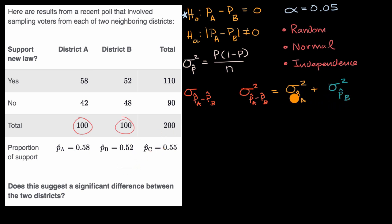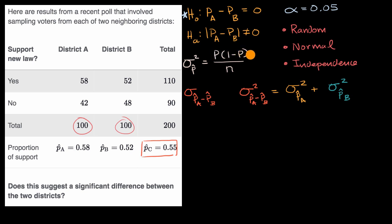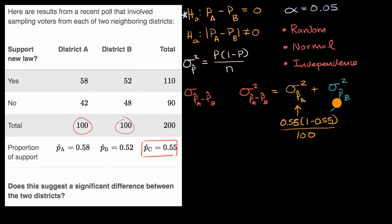We don't know the true proportions for District A or District B — that's why we're doing this hypothesis test. But we can estimate it. We're assuming the true proportions are equal, so our best estimate of that true proportion is the combined sample proportion. We use this combined sample proportion in place of p in our variance formula. Since we're assuming no difference between District A and District B, the same combined proportion applies to both.